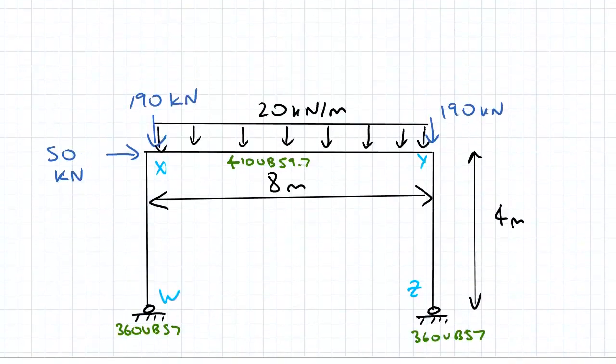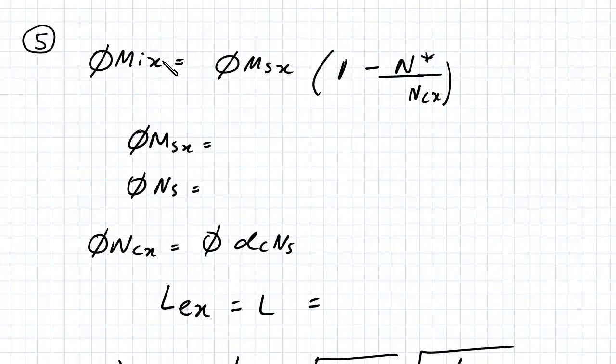Using this information, we'll carry on with Phi MI X calculation. So Phi MI X equals this formula: Phi MSX and N star over NCX. That's the difference here compared to Phi MRX where we used Phi NS. So Phi MSX equals 242.7 kilonewton meters.